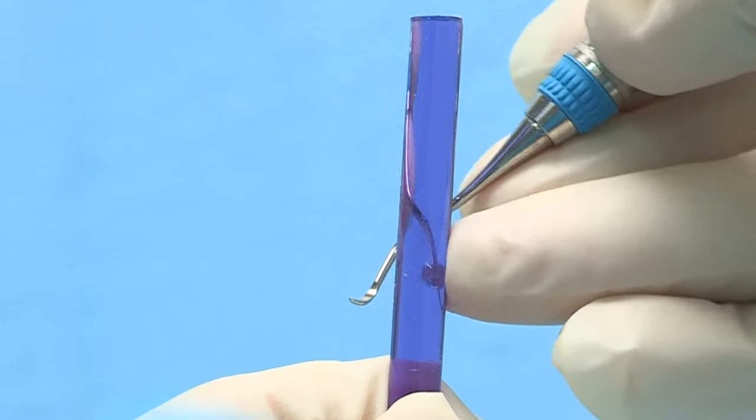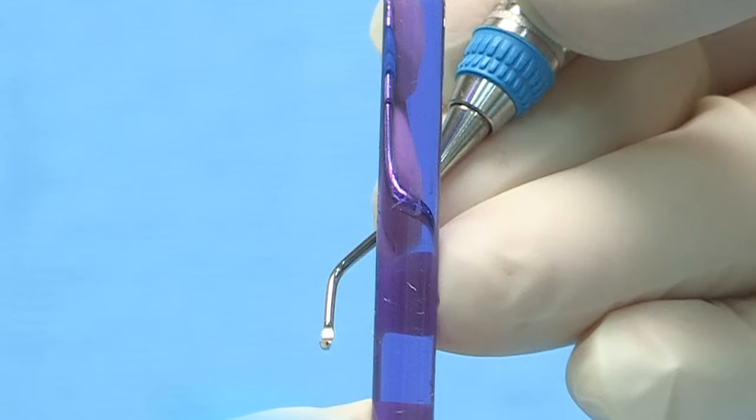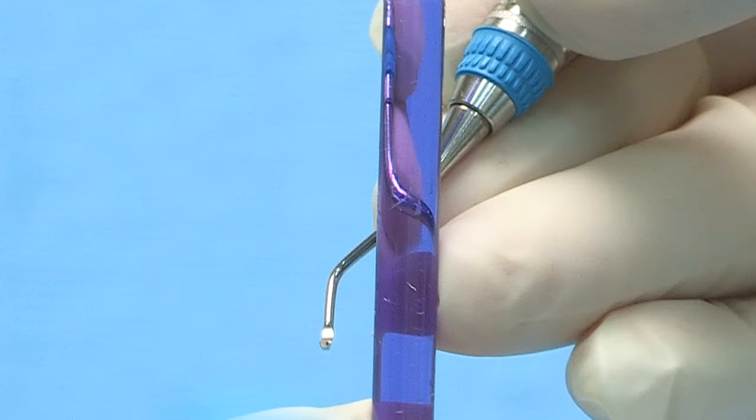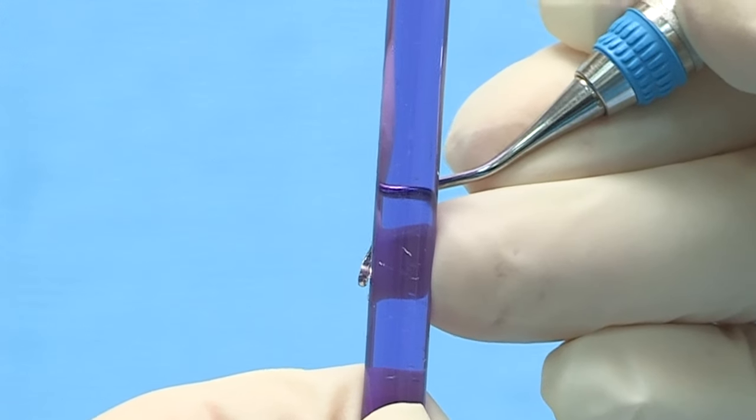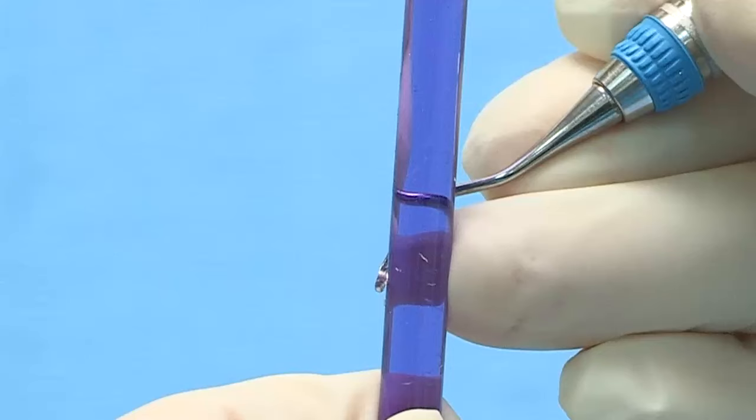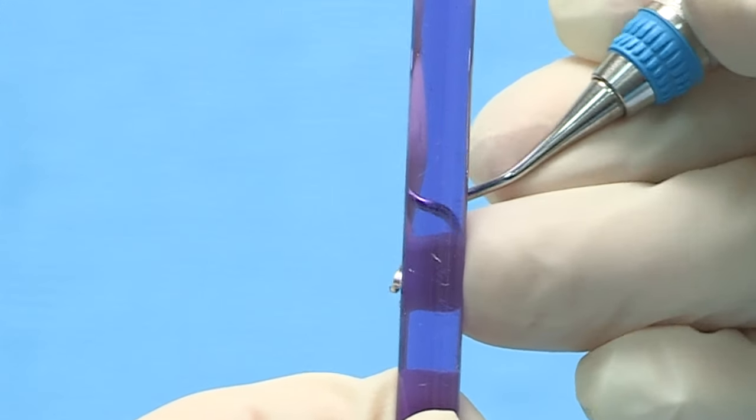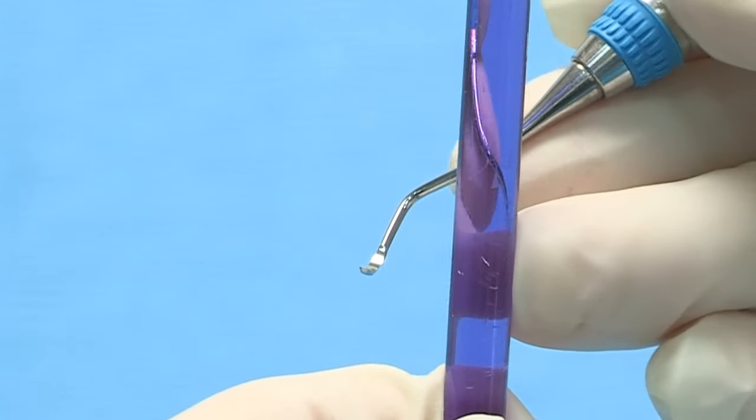Bring the instrument around the back of the test stick with the toe pointed toward you. Place the cutting edge to be tested against the left side of the test stick opposite your fulcrum. Tilt the terminal shank very slightly toward the test stick using the same angle you would use for scaling. Place the cutting edge laterally into the test stick and release.